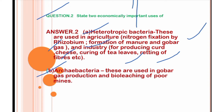Archaebacteria are the ancient ones. These are used in biogas production and bio-leaching of poor mines — they perform the leaching process for metal extraction from poor mines.